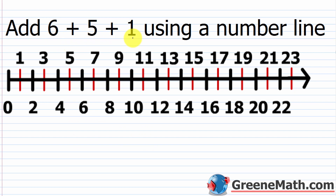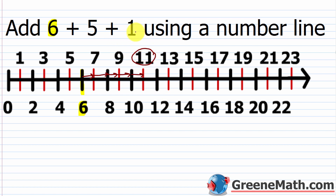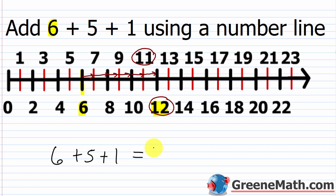Now we want to add six plus five plus one using a number line. Although we're adding three numbers, the process is basically the same. We're starting at the leftmost number — six — right here. Then we're going to go five places to the right because we're adding five: one, two, three, four, five. That puts us at 11. Now we're adding one more, so we just go one more place to the right. That puts us at 12. So six plus five plus one equals 12.